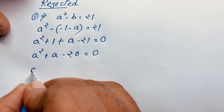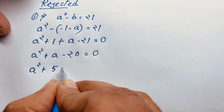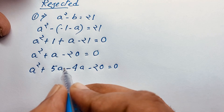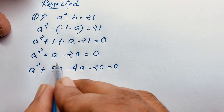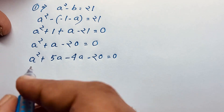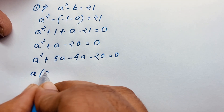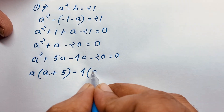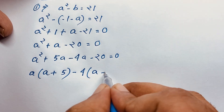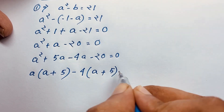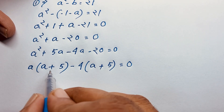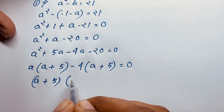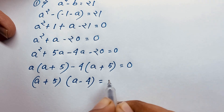Using the middle term factoring method: a squared plus 5a minus 4a minus 20 equals 0. Here 5 times 4 equals 20 and 5 minus 4 equals 1. Taking a as common: a(a plus 5), and taking minus 4 as common: minus 4(a plus 5) equals 0. So (a plus 5)(a minus 4) equals 0.